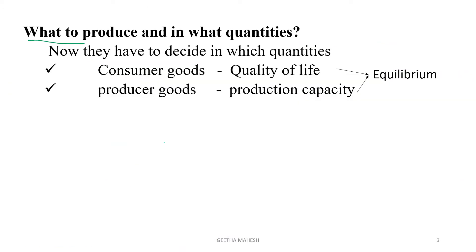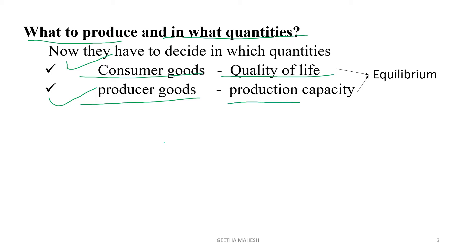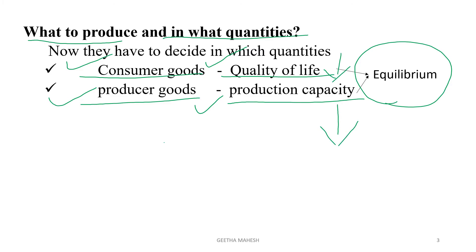After deciding what to produce, the economy has to decide in what quantities. If the economy has to make a choice between consumer goods and producer goods, they have to decide what quantity of each to produce. This is a more complicated problem because both consumer goods and producer goods are significant. Consumer goods promote the quality of life of the present generation, while producer goods promote production capacity for the future generation. So the economy has to achieve equilibrium — it should not reduce the quality of life of the present generation nor reduce production capacity for the future generation.